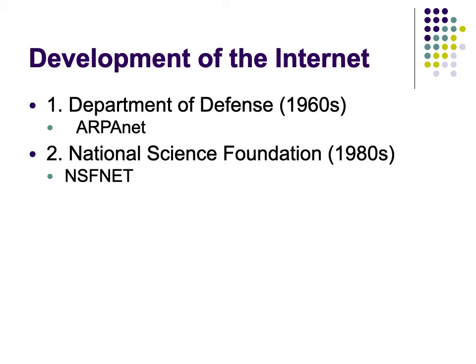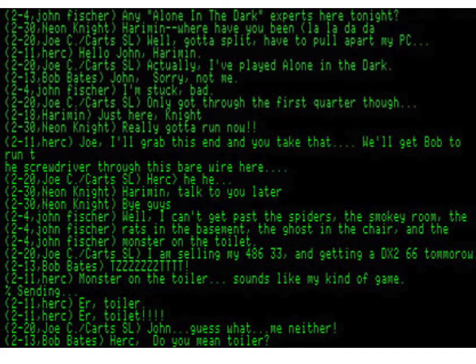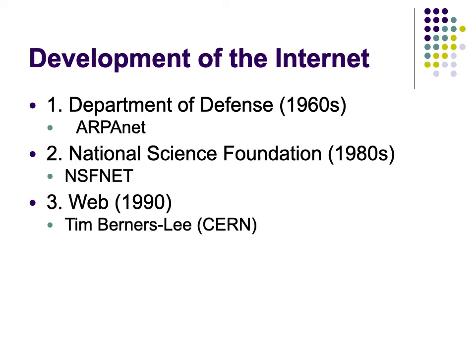The NSF did include the private sector — telephone companies, universities, and computer companies like IBM. The Internet at this stage was really different than what we know today. It was used for email, file transfers, and Gopher, but almost all of that was text. The Internet really changed to its familiar shape with the development of web protocols by Tim Berners-Lee, working in Europe at a major research institute. Around 1990, he developed HTML — Hypertext Markup Language — and then HTTP, the Hypertext Transfer Protocol.